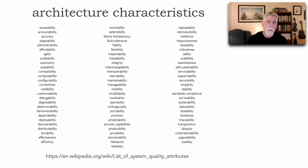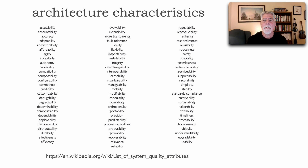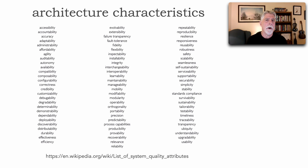But there's one in particular I want to focus on. Most of the time, when we think about architectural characteristics, we think about the operational characteristics that are very common: systems that need to scale, support high levels of availability, maybe fault tolerance, responsiveness, performance, and elasticity. These are all a group of what are called operational characteristics.